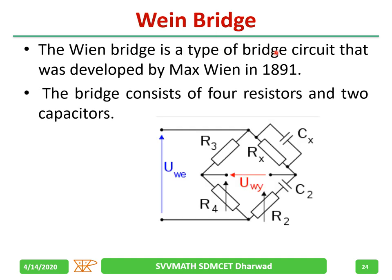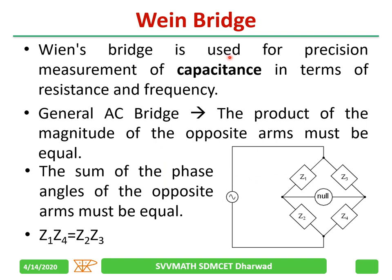The Wien bridge was developed by Max Wien in 1891. It consists of four resistors and two capacitors, and is used for precision measurement of capacitance in terms of resistance and frequency. In a general AC bridge, the product of the magnitudes of opposite arms must be equal, and the sum of the phase angles of opposite arms must also be equal for the bridge to be balanced — Z1·Z4 = Z2·Z3.